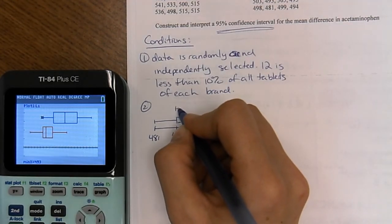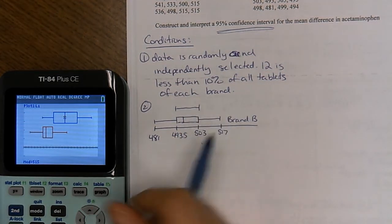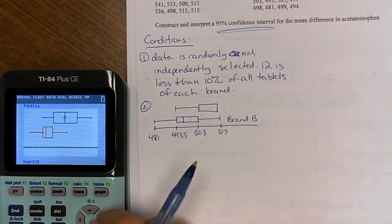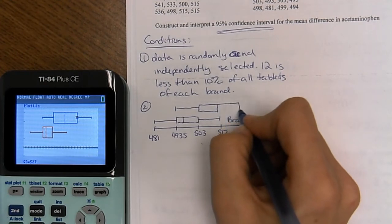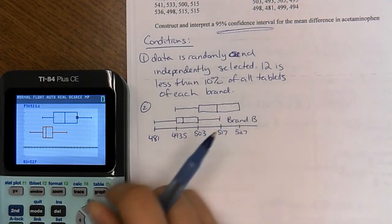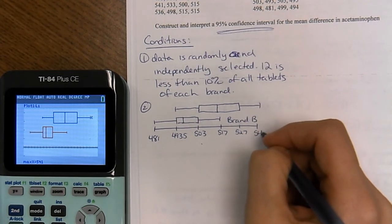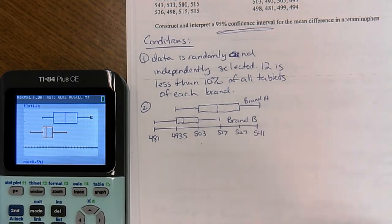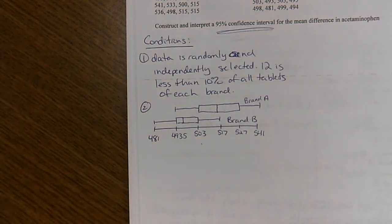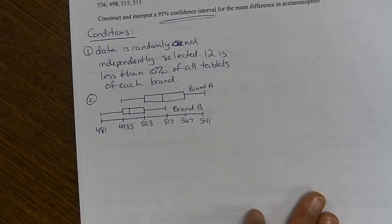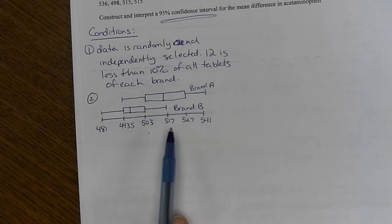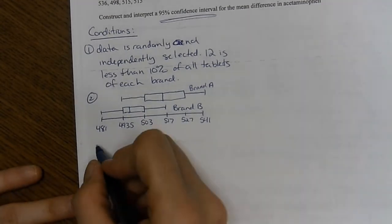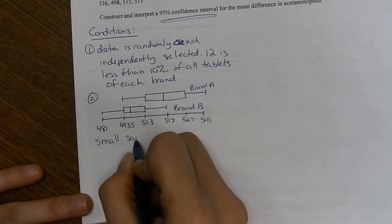And then I'm going to go up to the top. The min here is 493. Q1 is 504. Median is 515, 517, 527, 541. And then I'm going to put brand A sort of at the top. So one scale. Identify which boxplot is which. And then put some of the numbers down at the bottom.